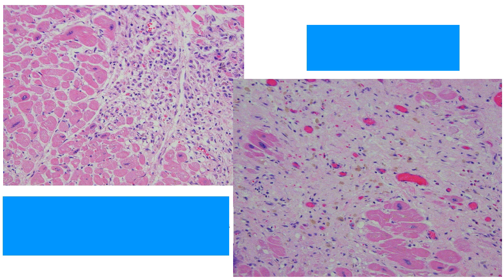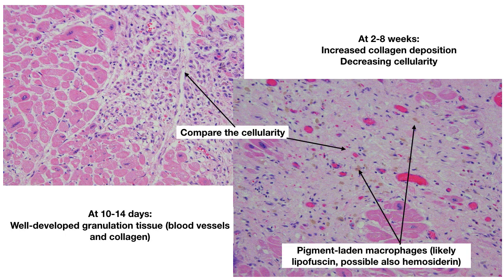What I want to do is compare the cellularity. At 10 to 14 days, you have well-developed granulation tissue with blood vessels and collagen. At 2 to 8 weeks, the collagen deposition increases and the cellularity decreases. Looking at the top left, there are a lot more cells than the bottom right, so the bottom right would be older. You can still see some blood vessels and pigment-laden — likely lipofuscin-laden — macrophages, with some residual cellularity.